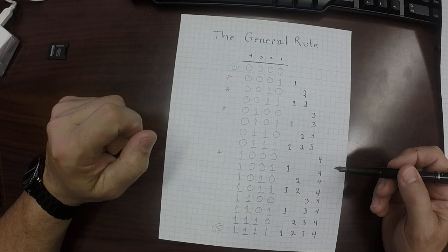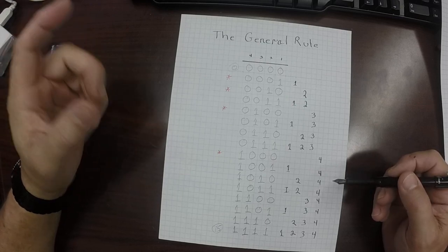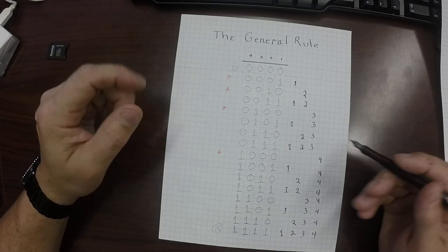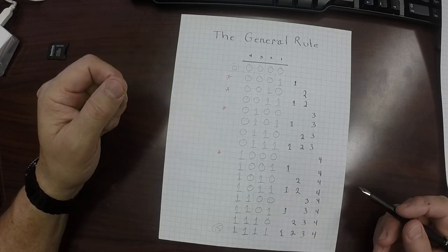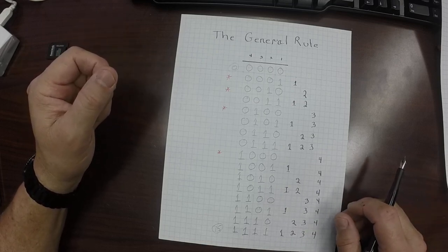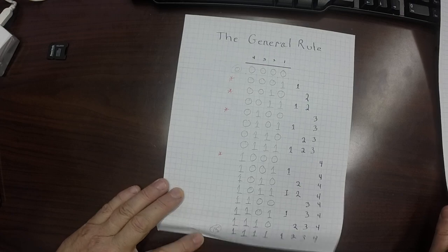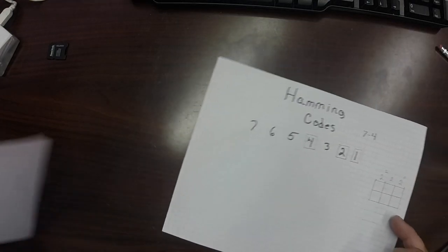So what we have is an overlap. The parity bits themselves check themselves and at least a couple of other binary numbers. So this overlap is how we're able to use the Hamming code to determine if something is an error, and if it is an error, which bit it actually is.